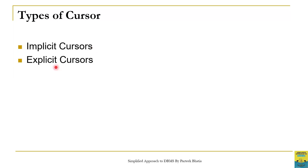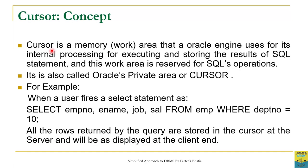In this session we are going to discuss the need and usage of explicit cursor with examples. As we have already discussed, a cursor is a memory or work area that the Oracle engine uses for its internal processing — for executing and storing the results of a SQL statement. This work area is used for all SQL operations and we call this work area a cursor. For example, when a user fires a SELECT statement — select column name from table name where condition — all the rows returned by the query are stored in the cursor and then displayed to the client end.